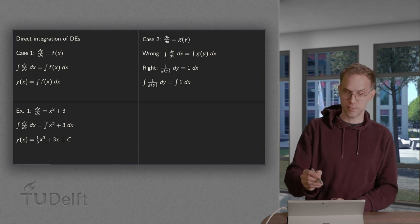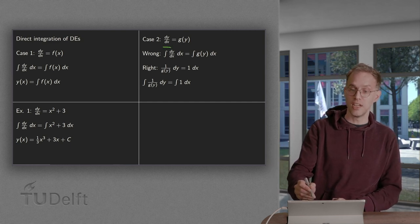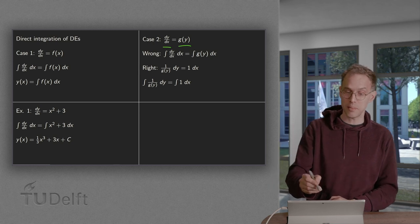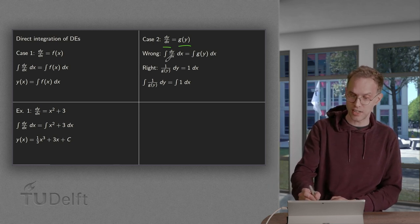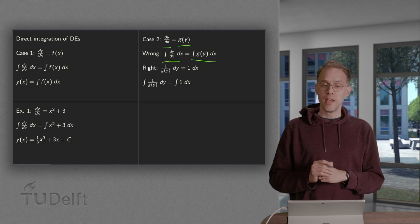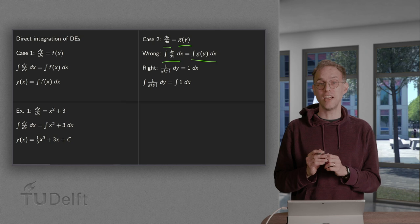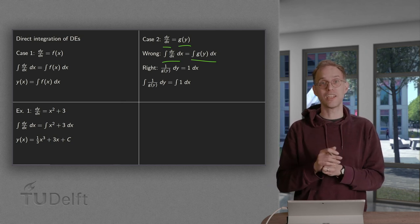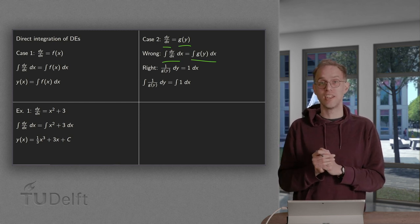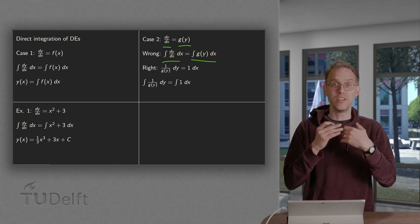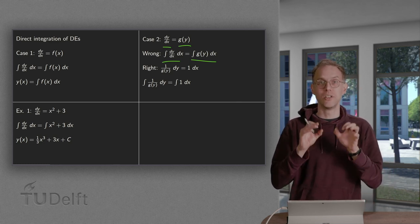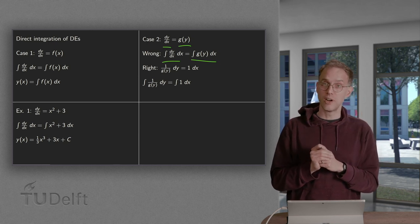Let us look at the second case, where dy/dx is a function of y only on the right-hand side. This technique worked nicely for Case 1, so let us try again — integrating with respect to x on both sides. The left-hand side is fine, but on the right-hand side we have to integrate g(y) with respect to x. However, y depends on x but we do not know how yet, so we cannot proceed. In order to compute it we need y as a function of x, but that is exactly what we are computing — so we are stuck. This approach does not work.